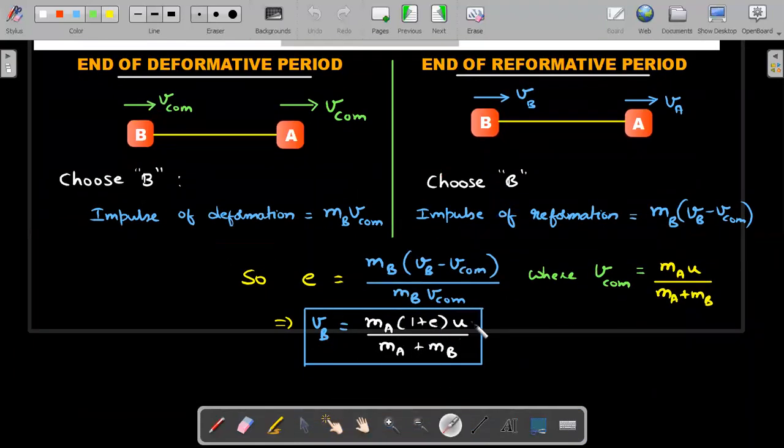You'll get the value of VB in terms of E. When E equals zero, you'll get back this thing, which is what usually happens. But this is a general case scenario where you are taking the properties of string also into account. It would be interesting to see when E is one, what would be the value of speed of B.